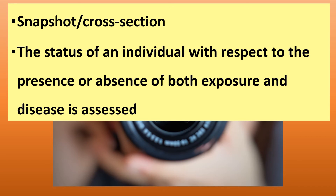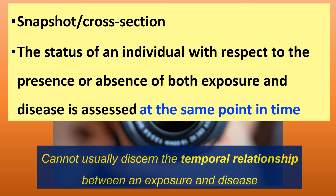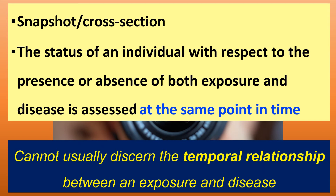Cross-sectional studies are good snapshots of a particular population on a particular health outcome. We can also understand the status of an individual with respect to the presence or absence of both exposure and outcome, but the problem is we do that at the same point in time. Because of that, we cannot discern the temporal relationship between an exposure and disease, which is needed to establish causality — the cause must happen before the effect, but measuring both at the same point in time means we cannot establish that temporality.